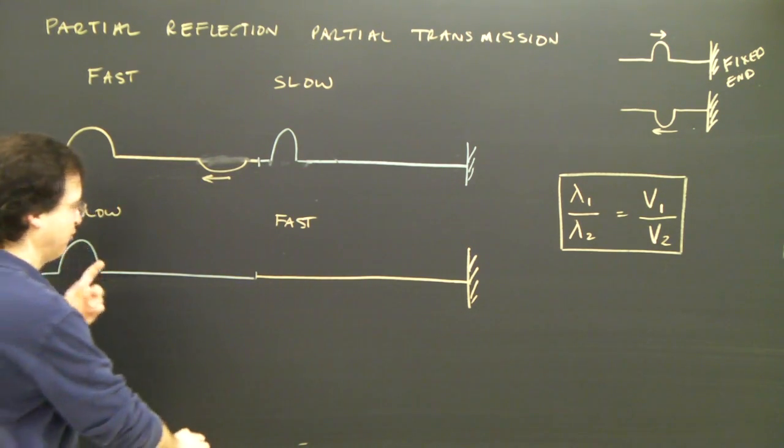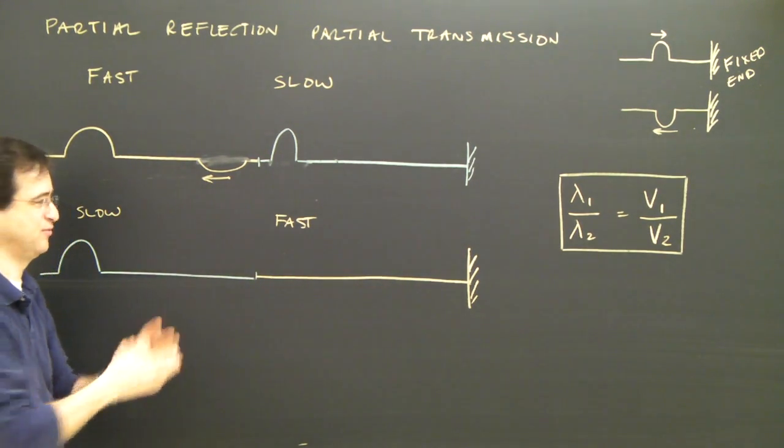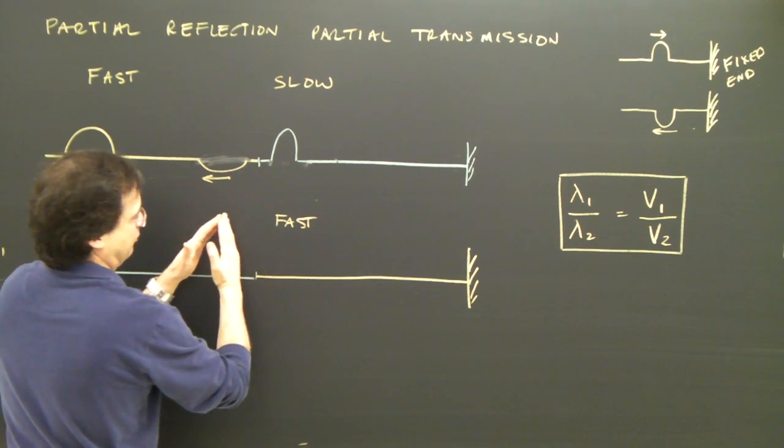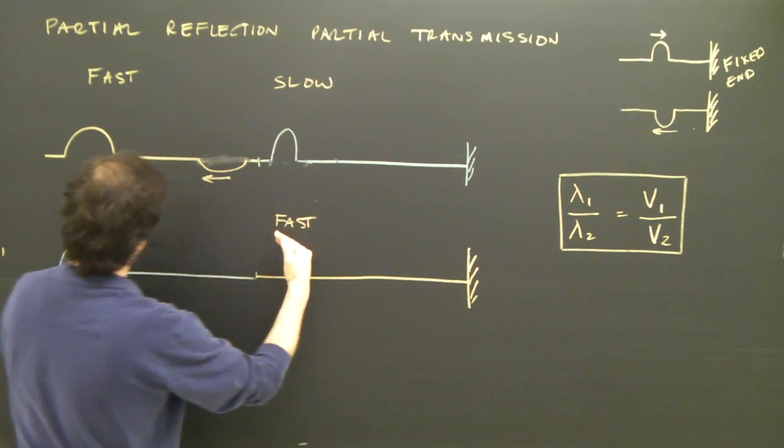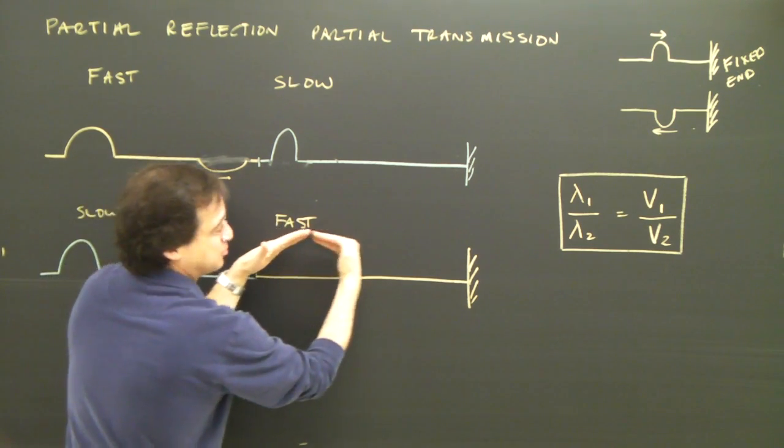So what happens when a wave goes from slow to fast? Well, if the wave goes from slow to fast, when the wave gets faster, this part enters the fast part first. And so it goes quickly. This part is still in the slow part. So it's going slow. The wave kind of spreads out.